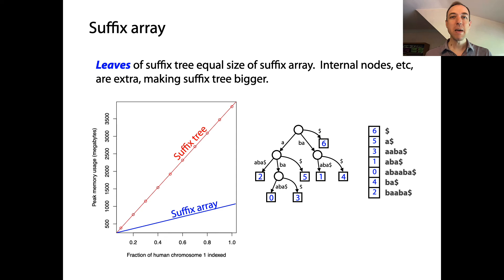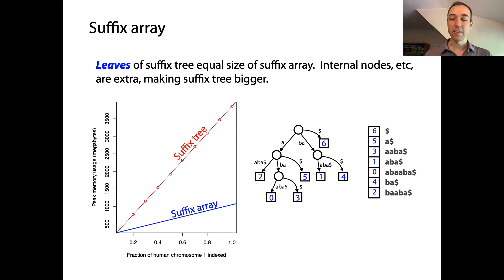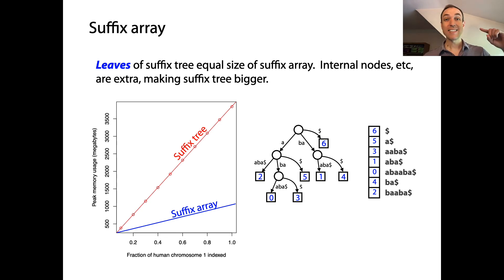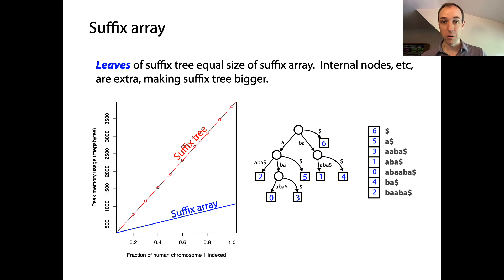This is the main motivation for why we look at the suffix array. It seems to be space-wise an improvement over the suffix tree — not an asymptotic improvement, we're still doing big O of m, but it appears to be a constant factor improvement over the suffix tree.